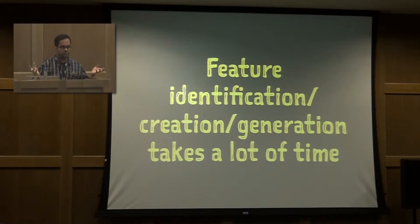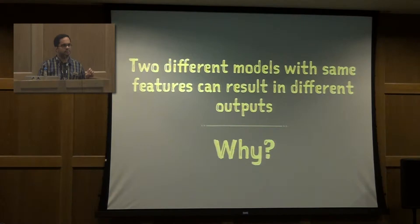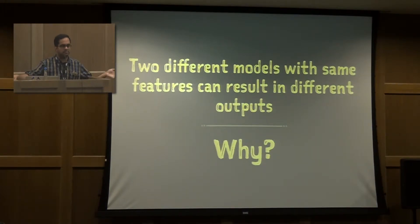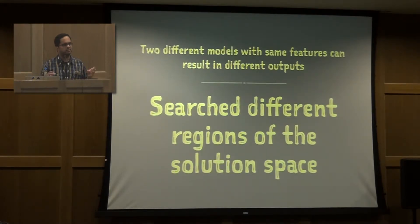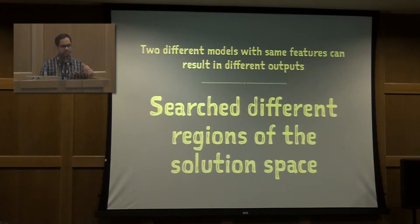One of the key inputs to a machine learning model is your training data. The process of getting your features and creating the required features takes a hell of a lot of time. You can try different kinds of models — like linear regression and random forest. They are very different and can result in extremely different outputs because the feature space each searches over is entirely different, leading to different regions of your solution space.